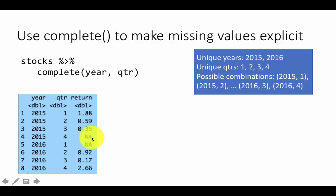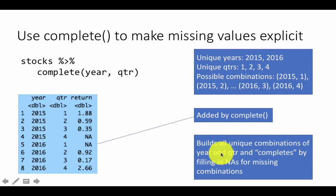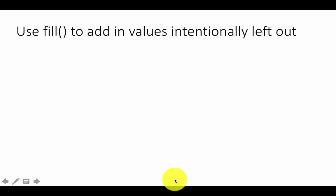If you did that, 2015 4 was already there. 2016 1 was not there. But because we said to complete it, this one has now appeared. The system inserted this combination 2016 1 and because there is no return for it, it just put an NA. If you want all the possible combinations to be properly shown up with missing values if there were any, then we can use the complete function to achieve that. This was the row that was actually added by the complete function. The way it works is it builds all unique combinations of year and quarter and completes by filling in NAs for the missing combinations.